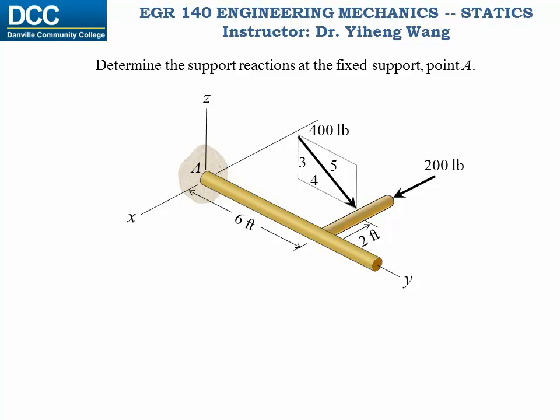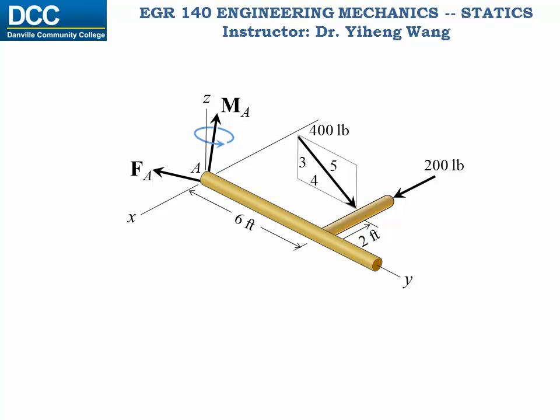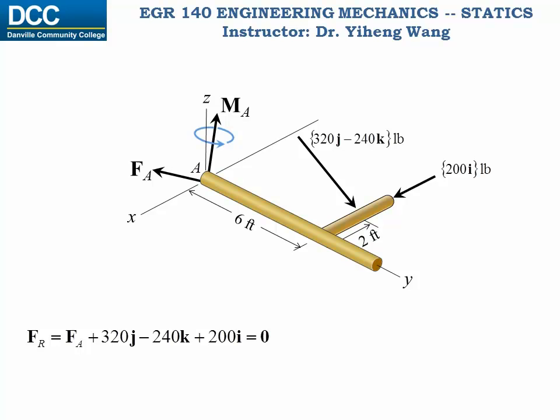Let's first try to solve this problem using the vector formulation, and represent the support reactions at point A as vectors: force vector F_A and couple moment vector M_A, currently in arbitrary directions. The two applied forces can be expressed as vectors as well. Therefore, the resultant force equals F_A plus 320J minus 240K plus 200I pounds, and it equals zero. Therefore, the force vector F_A is solved to be negative 200I minus 320J plus 240K pounds.